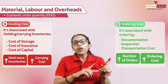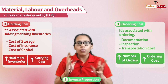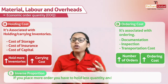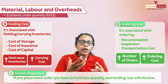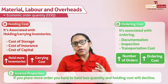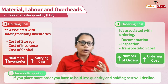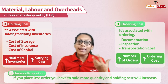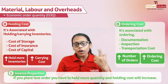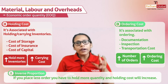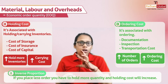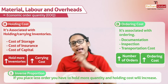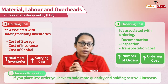Normally, ordering cost and holding cost are inversely proportional. The reason being: if you are going to place more orders, you have to hold less quantity, and in that scenario, holding cost will decline. On the other hand, if you place fewer orders, in one order you have to place more quantity, so the number of units you hold will increase, and hence your holding cost will increase.